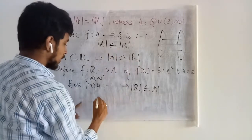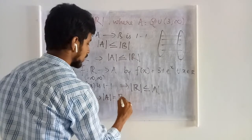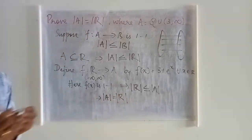So combining these two, what we have is cardinality of A is same as that of cardinality of R.